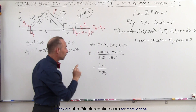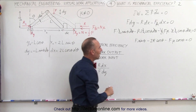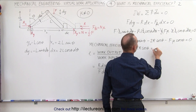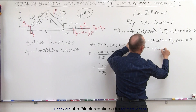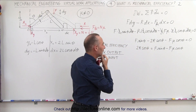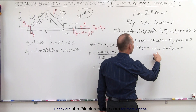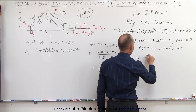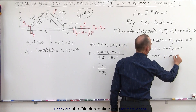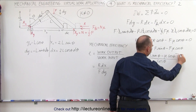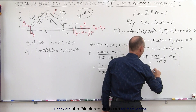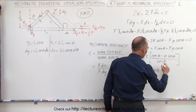Now we solve that equation for r so we can plug it into the efficiency equation. Moving terms to the other side, we get 2r times cosine of theta equals f times sine of theta minus f times mu times cosine of theta. Factoring out f and dividing both sides by 2 times cosine of theta, we get r equal to one-half f times the quantity (sine of theta minus mu times cosine of theta) divided by cosine of theta, which simplifies to r equal to one-half f times (tangent of theta minus mu).